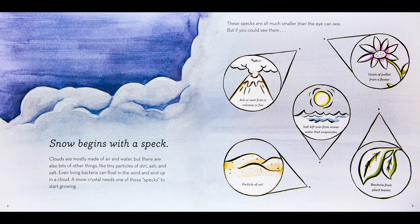Snow begins with a speck. Clouds are mostly made of air and water, but there are also bits of other things — like tiny particles of dirt, ash, and salt. Even living bacteria can float in the wind and end up in a cloud. A snow crystal needs one of these specks to start growing. These specks are all much smaller than the eye can see.